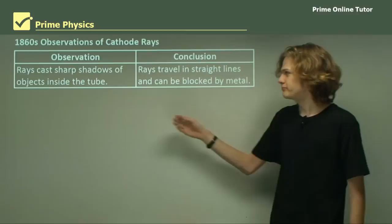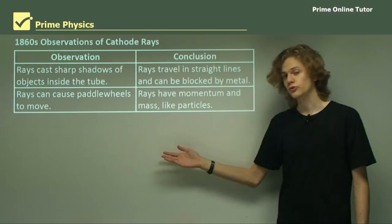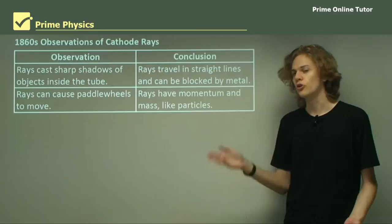So a few observations and conclusions that the scientists drew from these things were, when the rays cast sharp shadows of objects inside the tube, they assumed that the rays had to travel in straight lines and could be blocked by metal. The rays caused paddle wheels to move, and so they decided that the rays must have momentum and mass, like particles, to turn the paddle wheels.